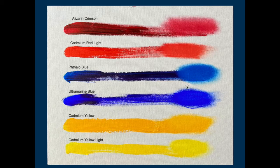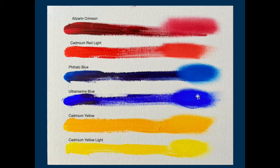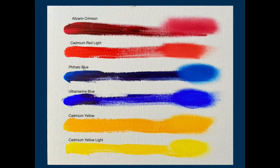Same thing with the two blues — what difference do you see? You should see that one is more purple and one is more green. This is a greener blue, and this is a more violet kind of blue. Ultramarine is a violet-type blue. Phthalo will always be a greener blue. Cadmium red will always have slightly more orange, and alizarin will tend more toward purple and violet.